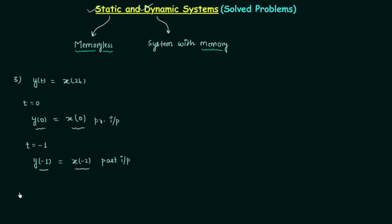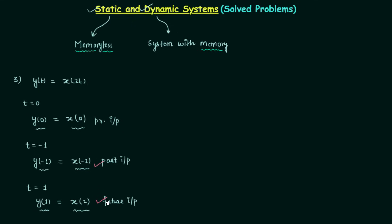Let's also have t equal to 1, so we have y(1) equal to x(2). In this case the present output is dependent on the future input. So the system output is also dependent on future values of input. We have all three cases: the system output is dependent on present, past, and future values of input. We do require a memory element to store the past and future values, so it is a system with memory and therefore a dynamic system.